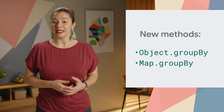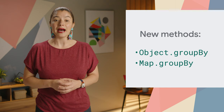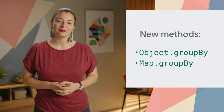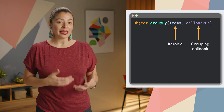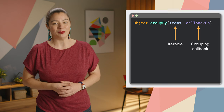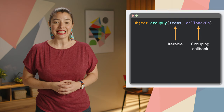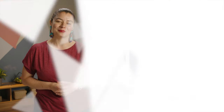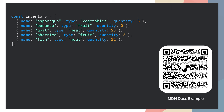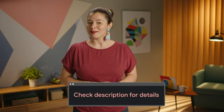Array grouping enables these scenarios by adding the Object.groupBy and Map.groupBy static methods. GroupBy calls a provided callback function once for each element in an iterable. The callback function should return a string or symbol that indicates the group of the associated element. In the example on the screen, we have an array of products and we use the groupBy method to get them grouped by their type. Check out the article in the description for the array grouping documentation.